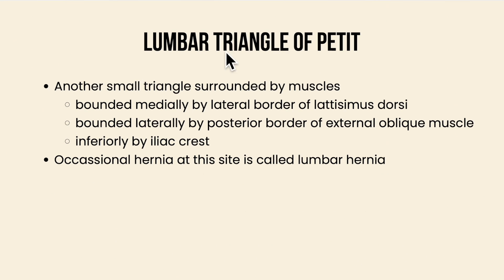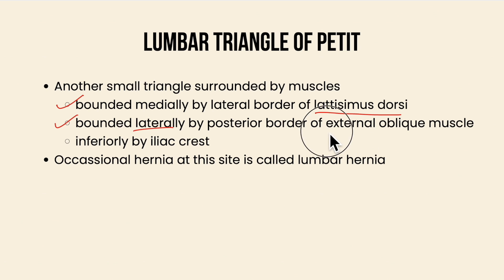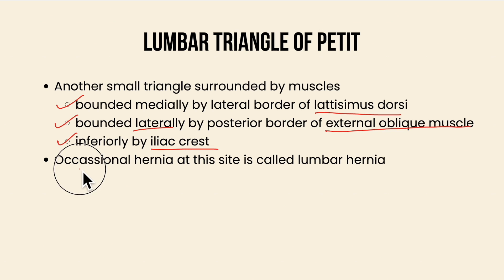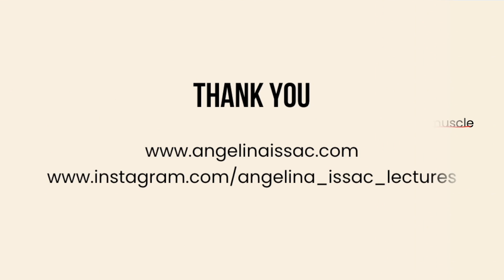Finally, looking at the lumbar triangle of Petit: it is another small triangle surrounded by muscles, bounded medially by the lateral border of the latissimus dorsi, laterally by the posterior border of the external oblique muscle, and inferiorly by the iliac crest. Occasional hernia at this site is called lumbar hernia. I hope you found this video helpful.